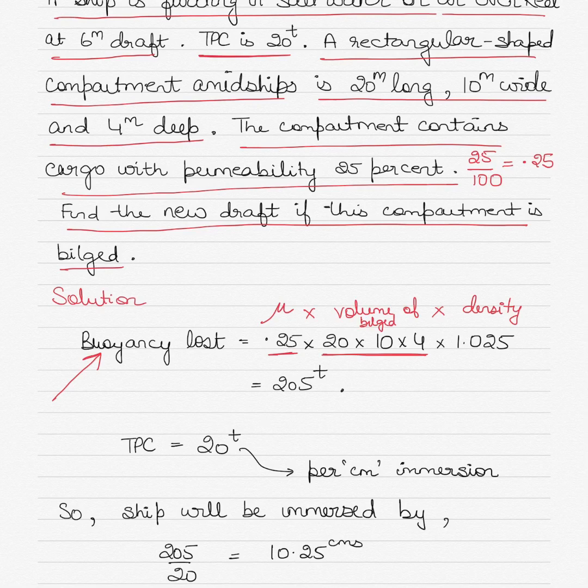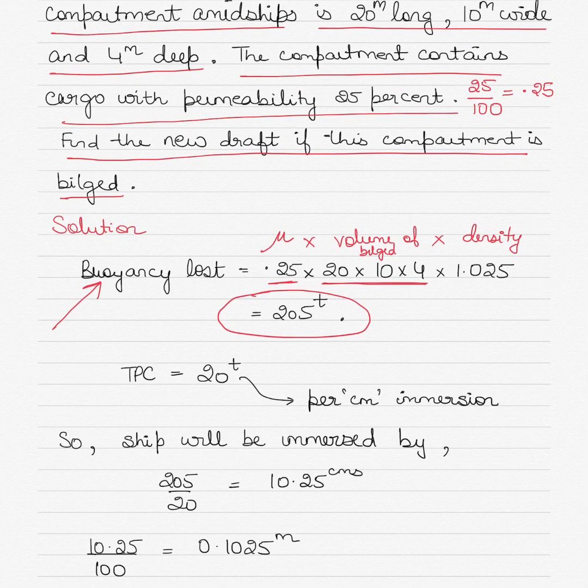The TPC means you know how much weight sinks a vessel by one centimeter. That means now you have to find out how much weight has entered the compartment or has been loaded into the compartment, so that you can use the TPC value and find out how much was the immersion. So as soon as we find out the weight of the water that has loaded in the compartment, that is 205 tons, and we have the TPC.